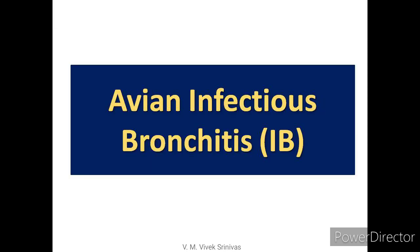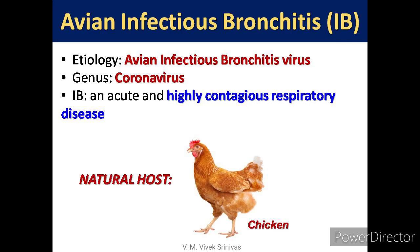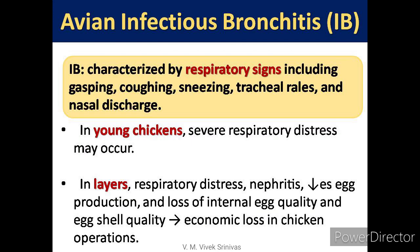First, we will discuss avian infectious bronchitis (IB) infection. The disease is caused by the avian infectious bronchitis virus of genus Coronavirus. This virus causes an acute and highly contagious respiratory disease in chickens, characterized by respiratory signs including gasping, coughing, sneezing, tracheal rales, and nasal discharge. In young chickens, there will be severe respiratory distress.